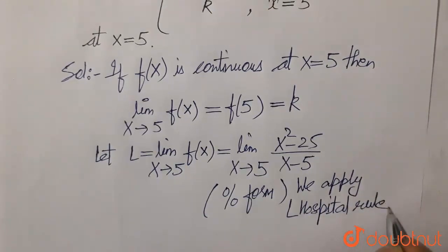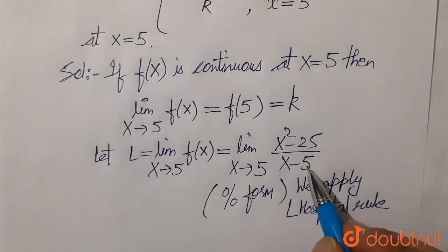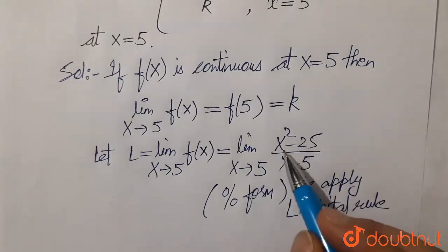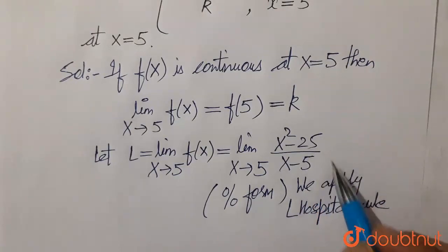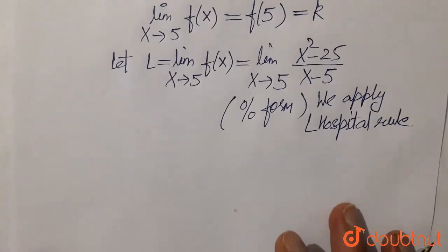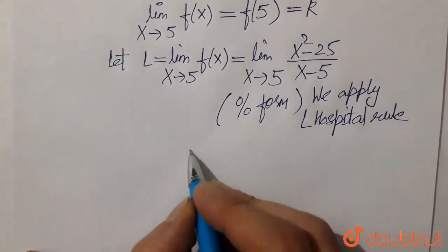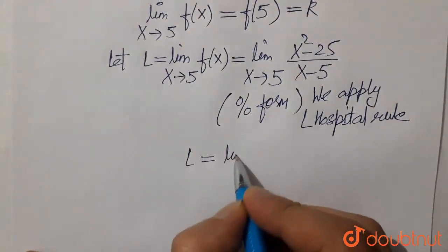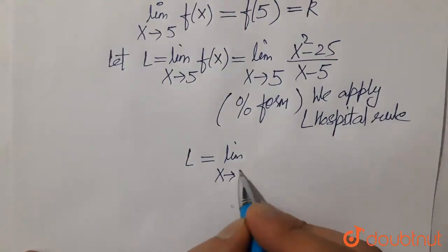According to L'Hospital's rule, when there is a 0 by 0 form, we differentiate both numerator and denominator with respect to x so that the 0 by 0 form is removed. Now applying L'Hospital's rule, we get limit as x approaches 5.